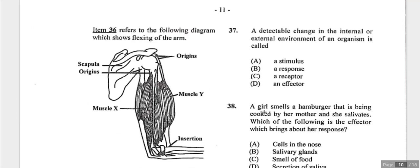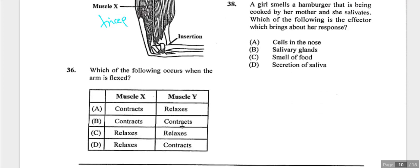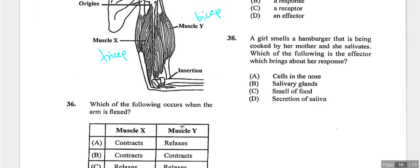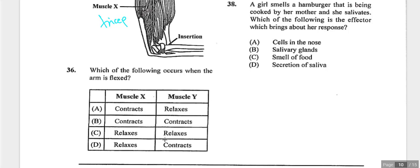Question thirty-six shows the upper arm musculature during flexion. Muscle Y is the bicep and muscle X is the tricep. When the arm is flexed, muscle Y (bicep) contracts and muscle X (tricep) relaxes. Options A and B are eliminated because muscle X is relaxing, not contracting. Answer is D — muscle X relaxes and muscle Y contracts.